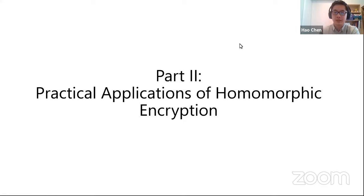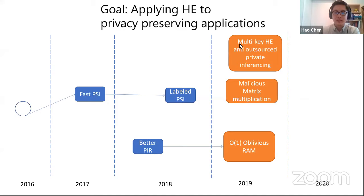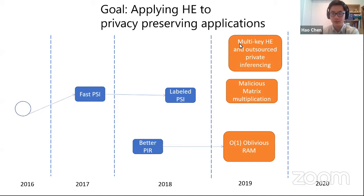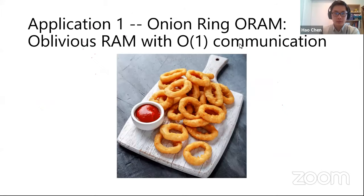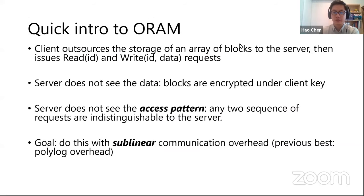In the next part, I will talk about the three applications of homomorphic encryption that I promised at the beginning. This slide is kind of my personal timeline of working on these applications. The first one I'll talk about is Onion Ring ORAM — oblivious RAM with constant communication overhead. Let me give a brief introduction to ORAM. ORAM is a secure protocol where a client wants to store an array of blocks on a server and then read and write data from the server.